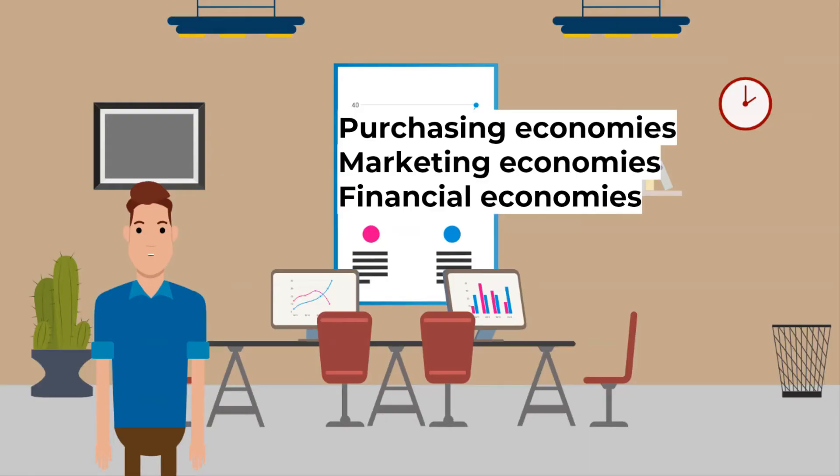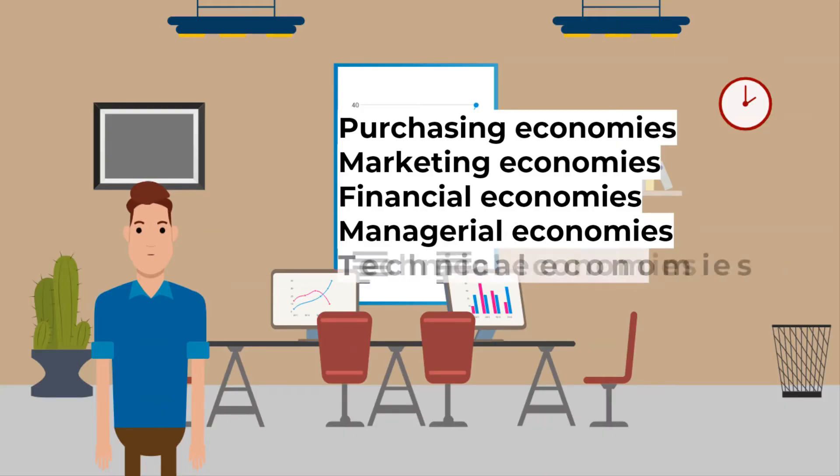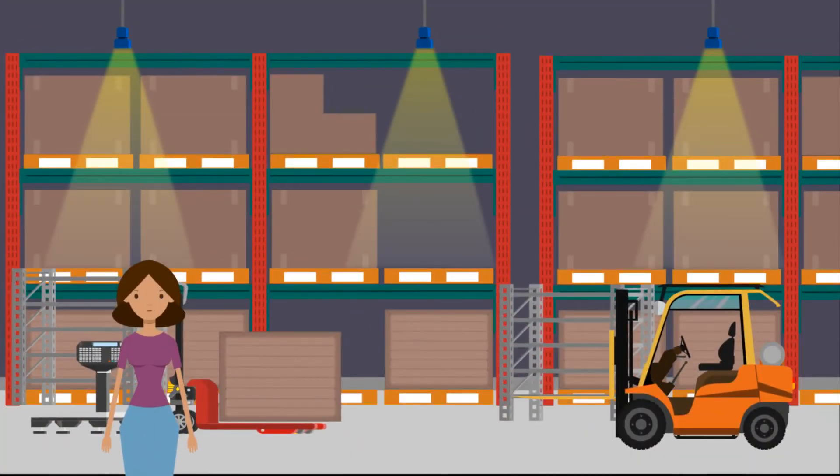Managerial economies. Large businesses may be able to afford to hire specialist managers who are very efficient and can reduce the business's costs. Technical economies. Large businesses can afford to buy large machinery, such as a flow production line that can produce a large output and reduce average costs.